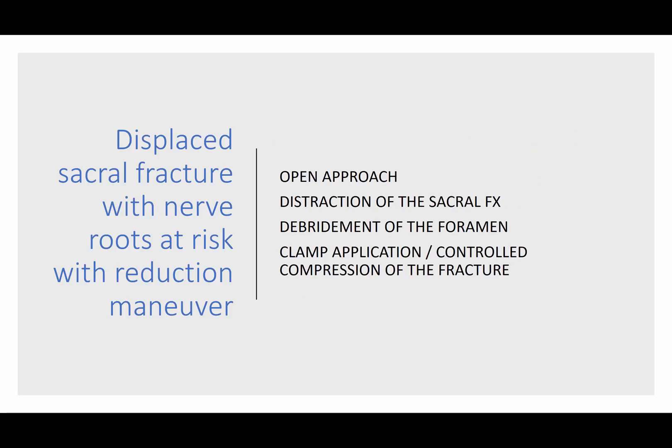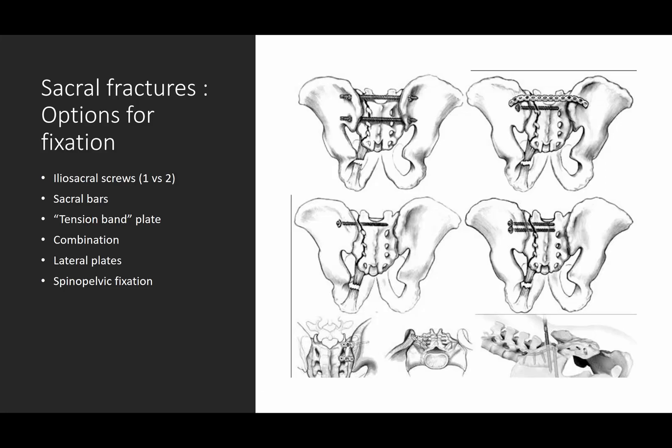Displaced sacral fractures with nerve roots at risk can be managed surgically. If you need to deal with the fracture and want to avoid crushing or pinching the nerves further, you may have to do an open approach, distract the sacral fracture, clean out the foramen, and then in a controlled fashion compress the fracture while making sure you're not catching the nerve root.